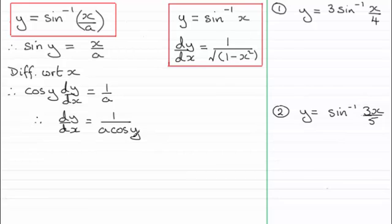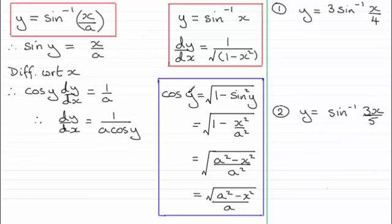Well we should be familiar with the identity that cos squared y plus sine squared y is 1. And if I rearrange that, I end up with cos y equaling the root of 1 minus sine squared y.